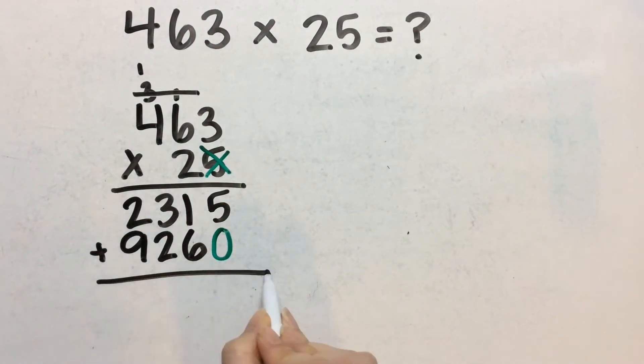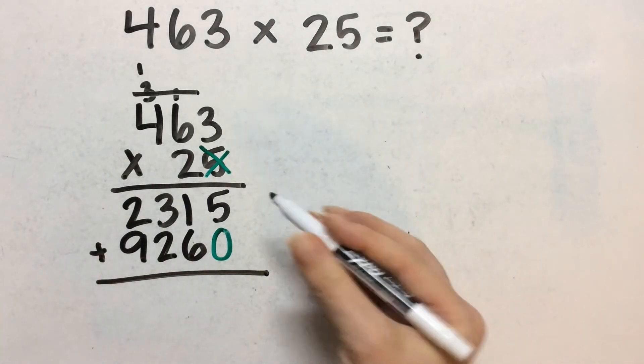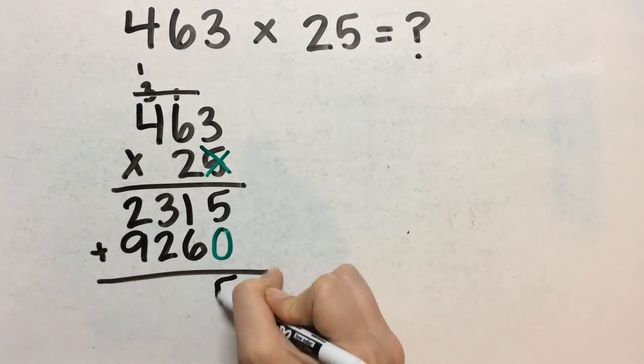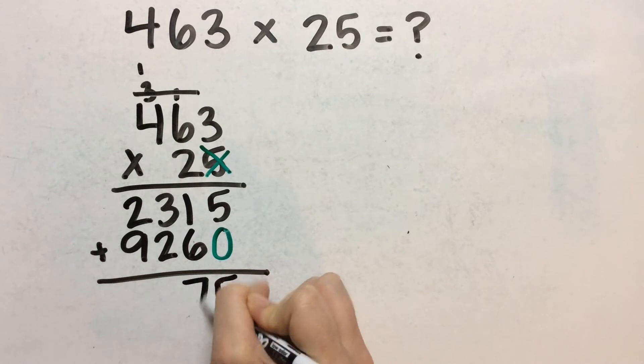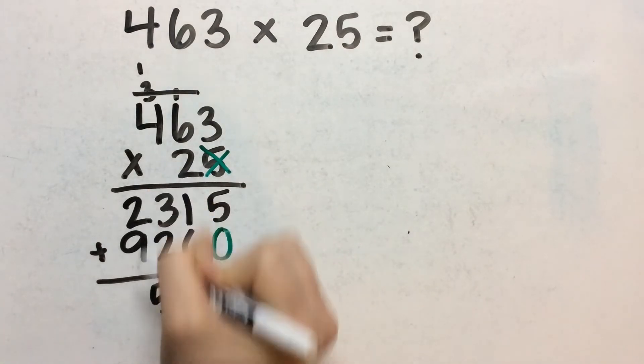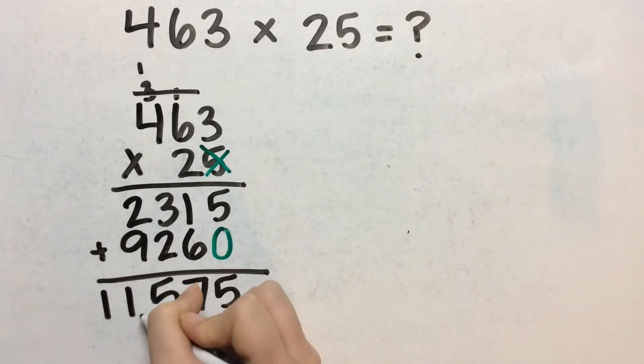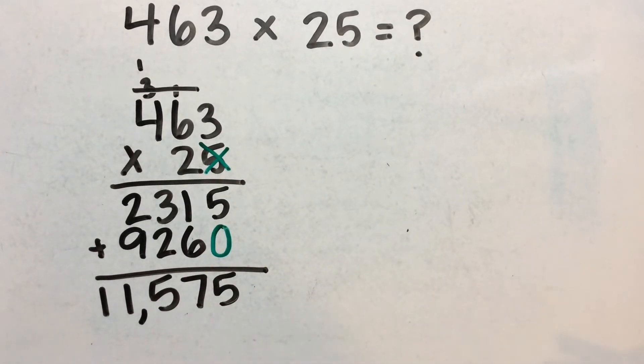And then I add these together. So this is the standard algorithm. Five plus zero is five. Six plus one is seven. Two plus three is five. Nine plus two is 11. So we got 11,575.